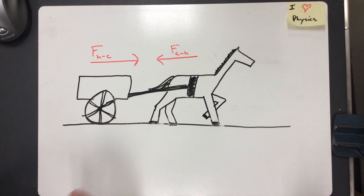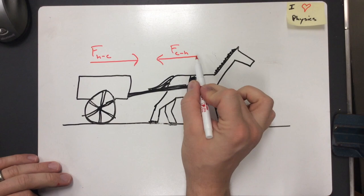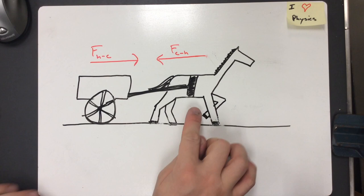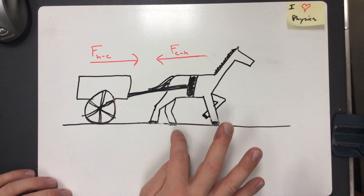So what we've got to do is we've got to take a look at the other forces that are acting in this system. If we take a look, it's not just these two forces acting on each other. We have other forces going on. Now, how is this horse able to provide this force on the cart?